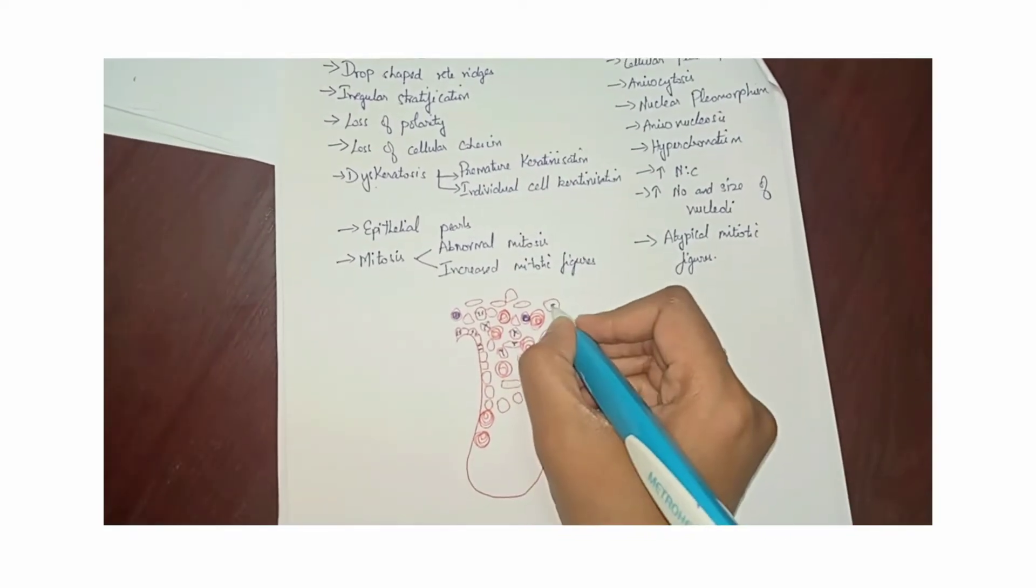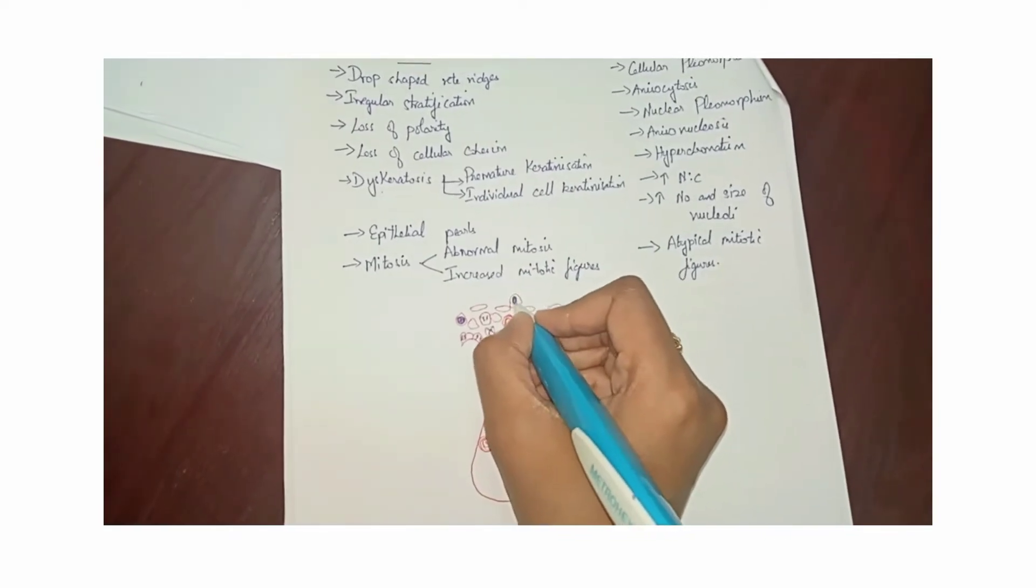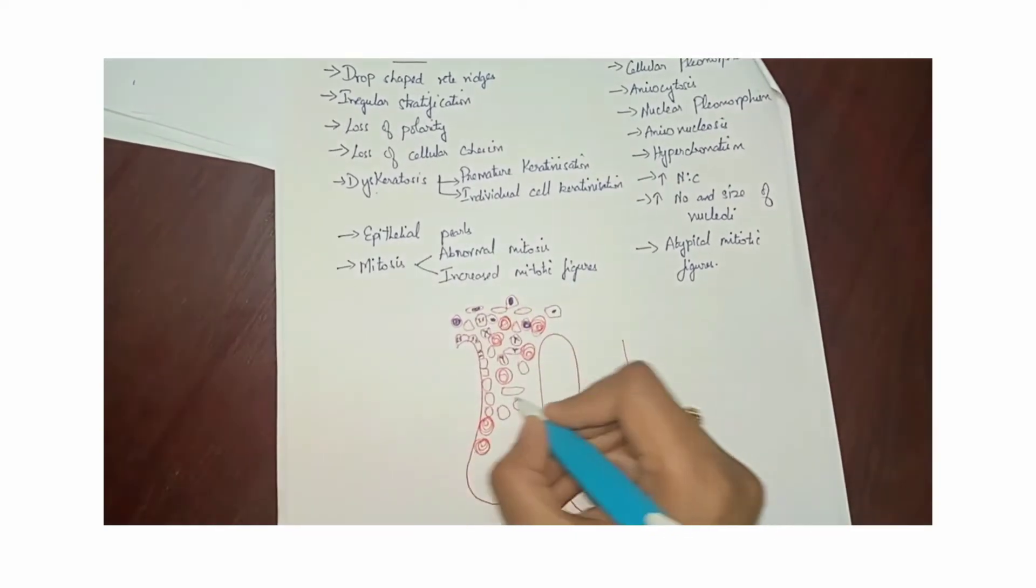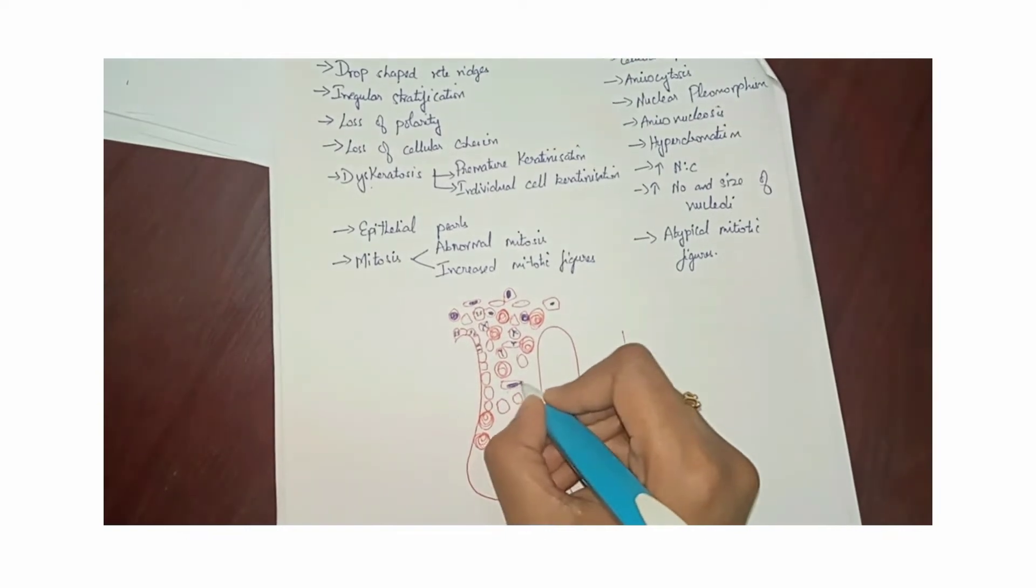Similarly, the nucleus can also be of any shape and also can be of any size, and there is also going to be the presence of hyperchromatism.